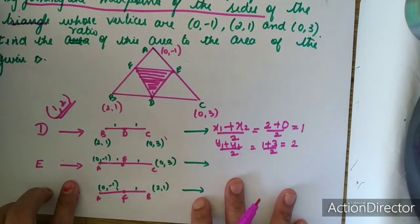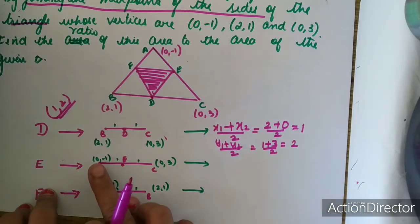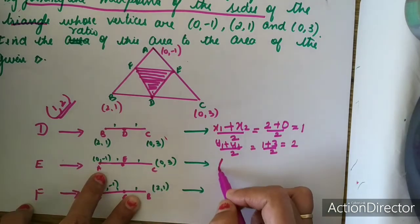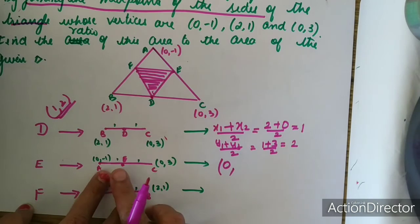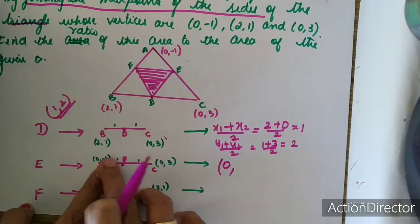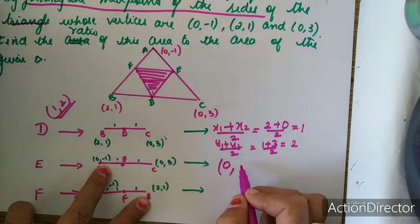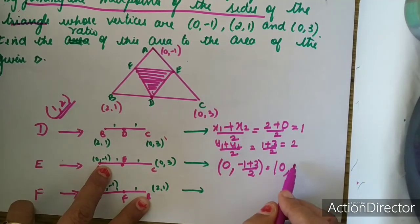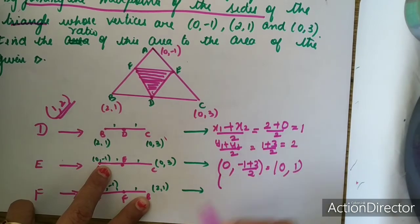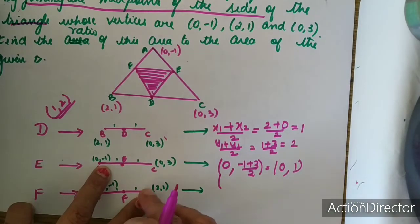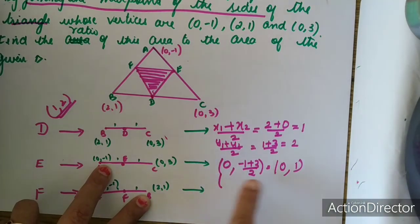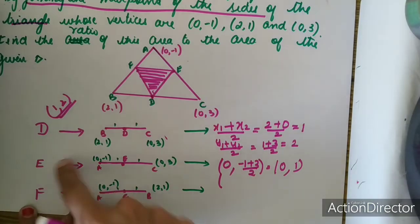Similarly I can find the coordinates of point E. X1 is 0 and X2 is also 0, so 0 divided by 2 is equal to 0. Coming to the Y coordinate, minus 1 plus 3 divided by 2 gives 2 divided by 2, equal to 1. So the coordinates of E are (0, 1).